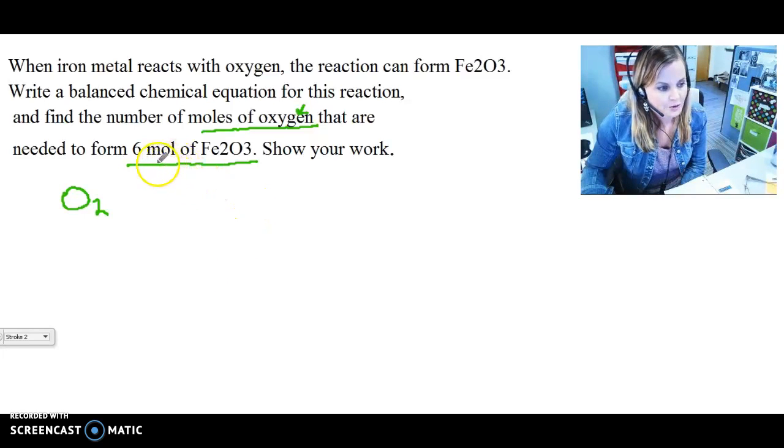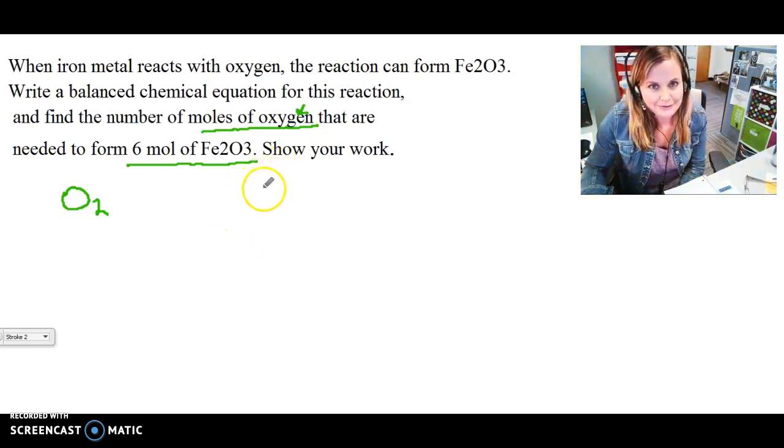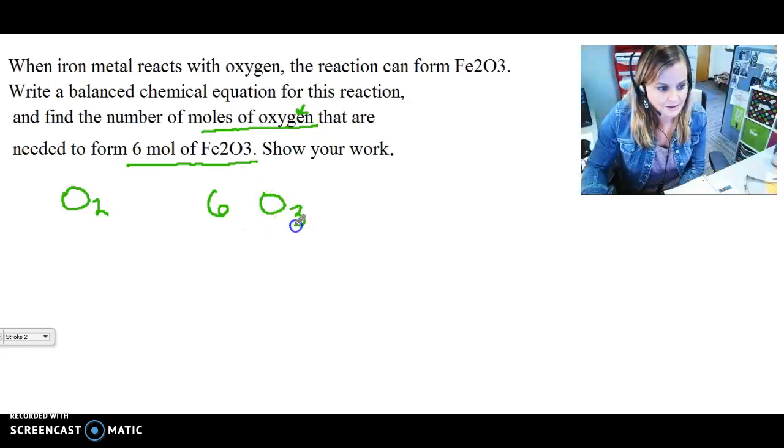So the first thing it says is you have six moles of this iron oxide, iron 2 oxide. We went through a lot of calculations in class before realizing that if you have six moles of iron 2 oxide that means you're gonna have six O3's which gives us 18, basically 18 oxygens.